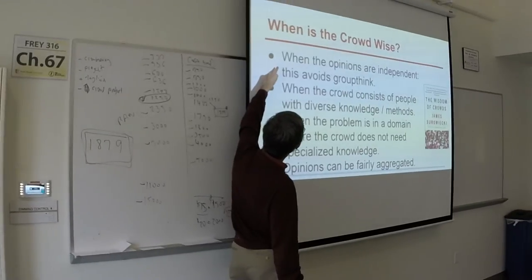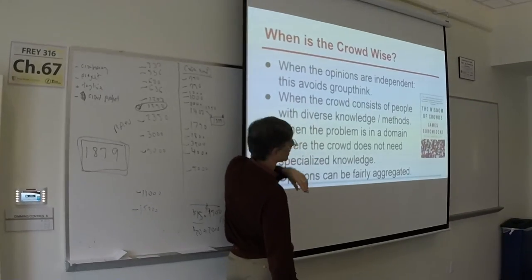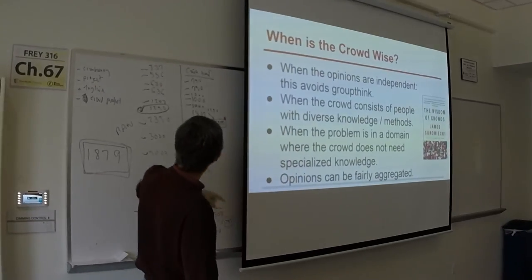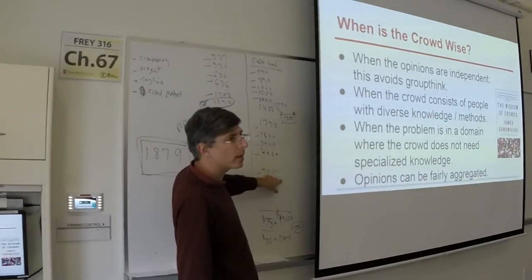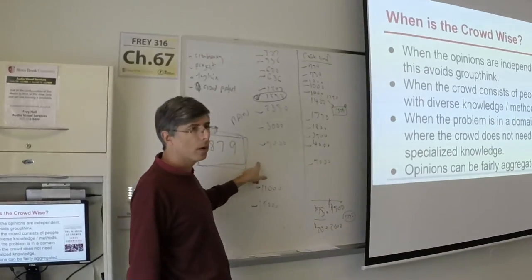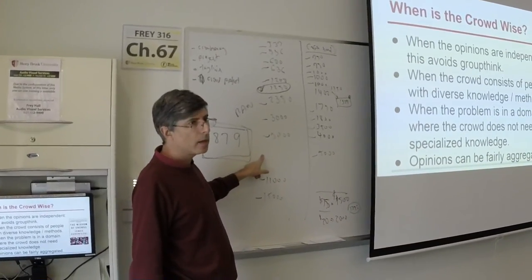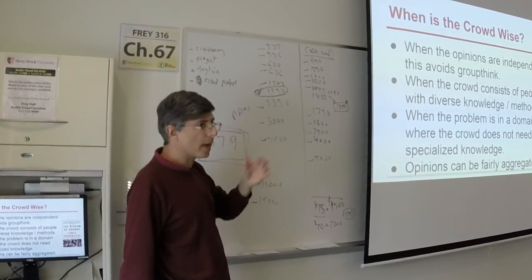One is that the opinions are independent. Why is it that this group of people had a narrower group of opinions than this group of people?